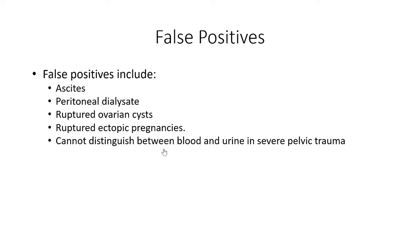POCUS cannot distinguish between blood versus urine. In patients with severe pelvic trauma who rupture their bladder, urine in the abdomen would look the same as blood - so if you're suspecting a bladder rupture, what you're seeing may be urine rather than bleeding from an organ. Additionally, perinephric fat can be mistaken for fluid - in obese patients, fat accumulates around the kidneys and won't look black, but will appear as a gray echogenicity different from surrounding organs. If you see the same amount of this grayish appearance on each side around both kidneys, it may be perinephric fat.